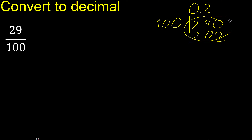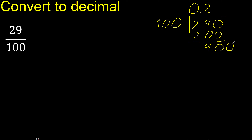Subtract: the result is 90. There is no number that goes down, therefore complete — always complete with 0.